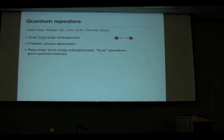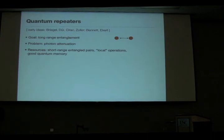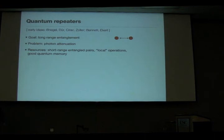The solution to this problem was suggested by Briegel, Dür, and Zoller, along with the Oxford group and Charlie Bennett. The idea is to create a so-called quantum repeater. Classically, if I lose the photon it's not a big problem — I use many photons and amplify. But quantum mechanically, we cannot amplify without also introducing noise, and so we have to do something different. The repeater is the solution to that problem.